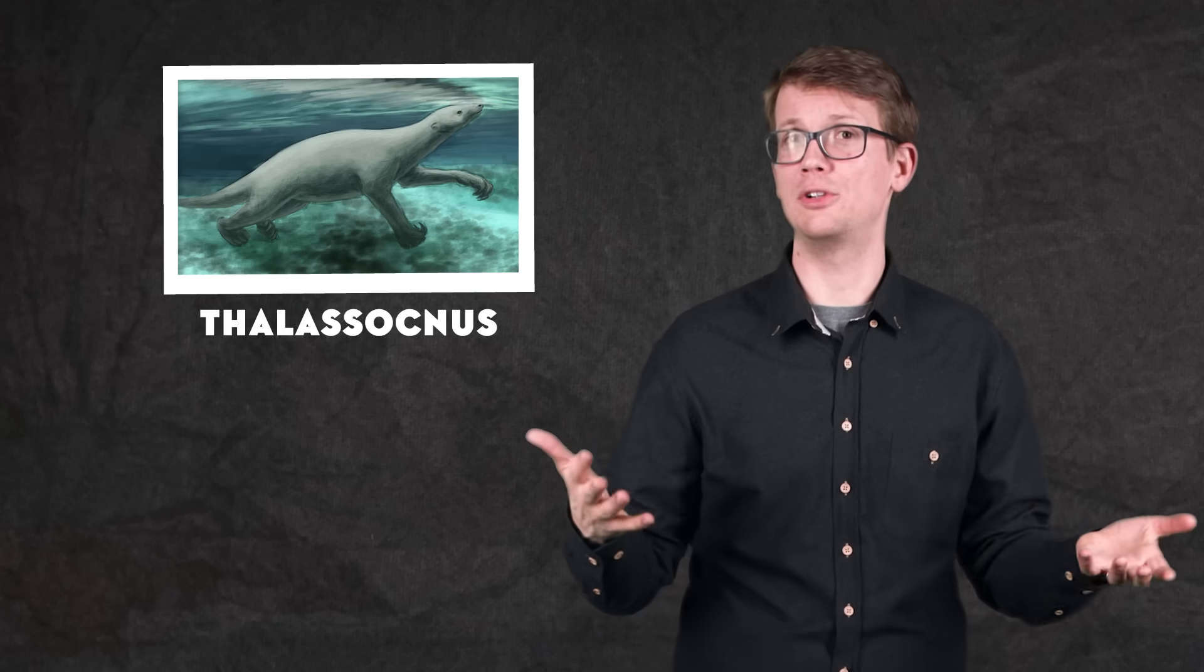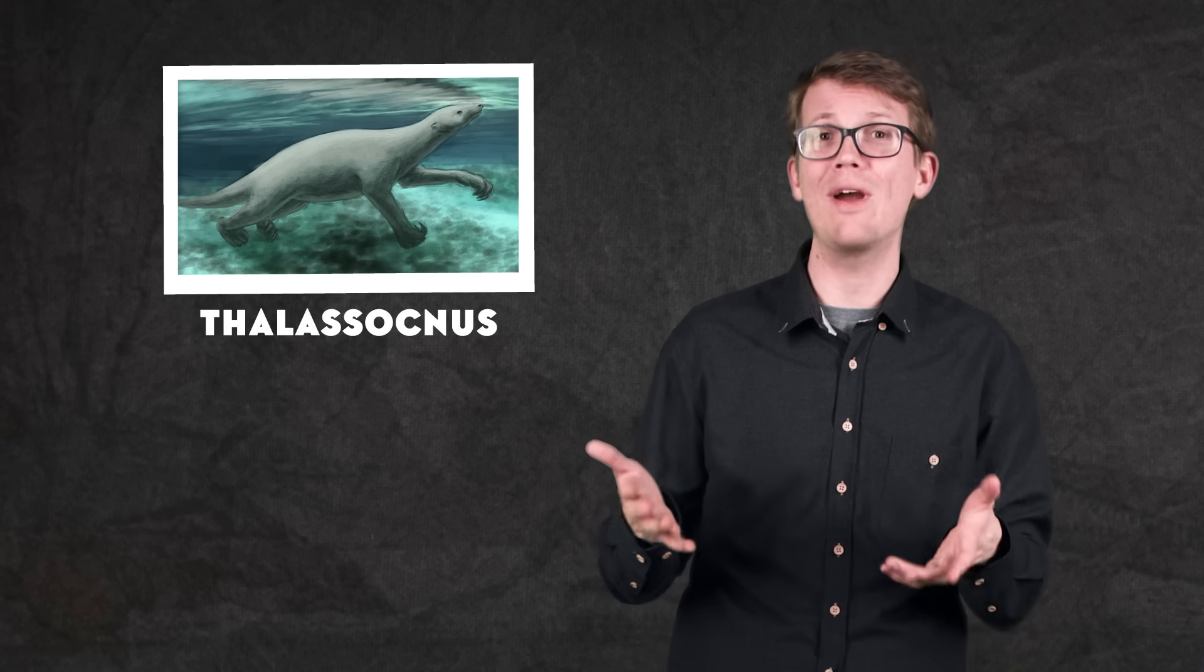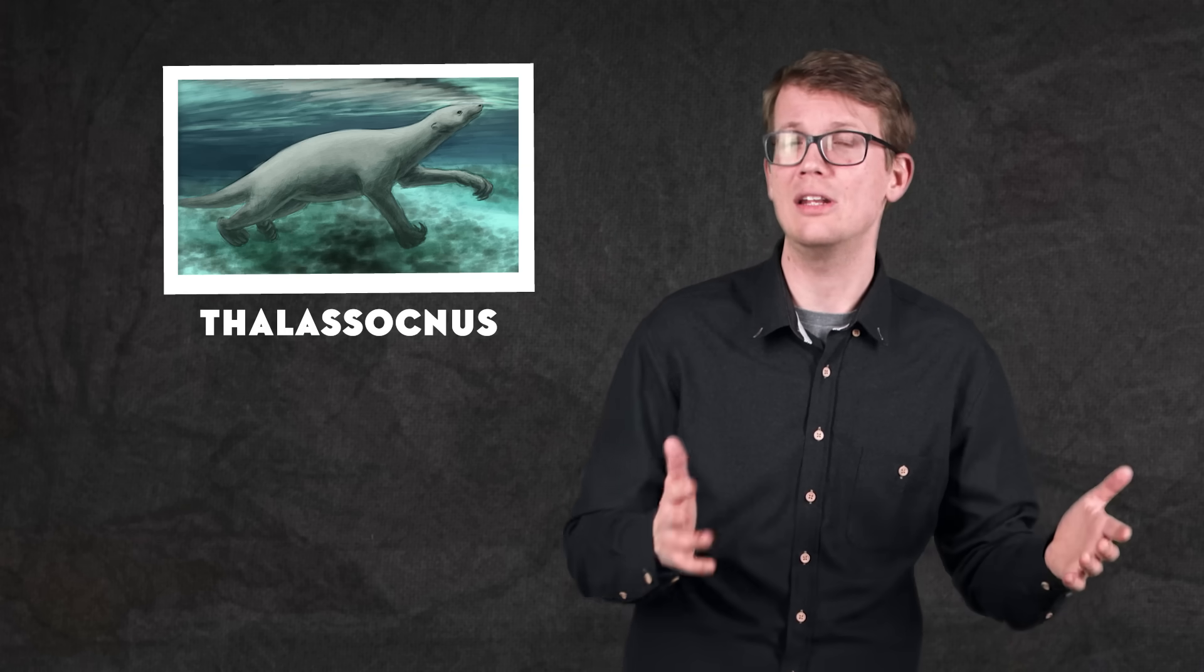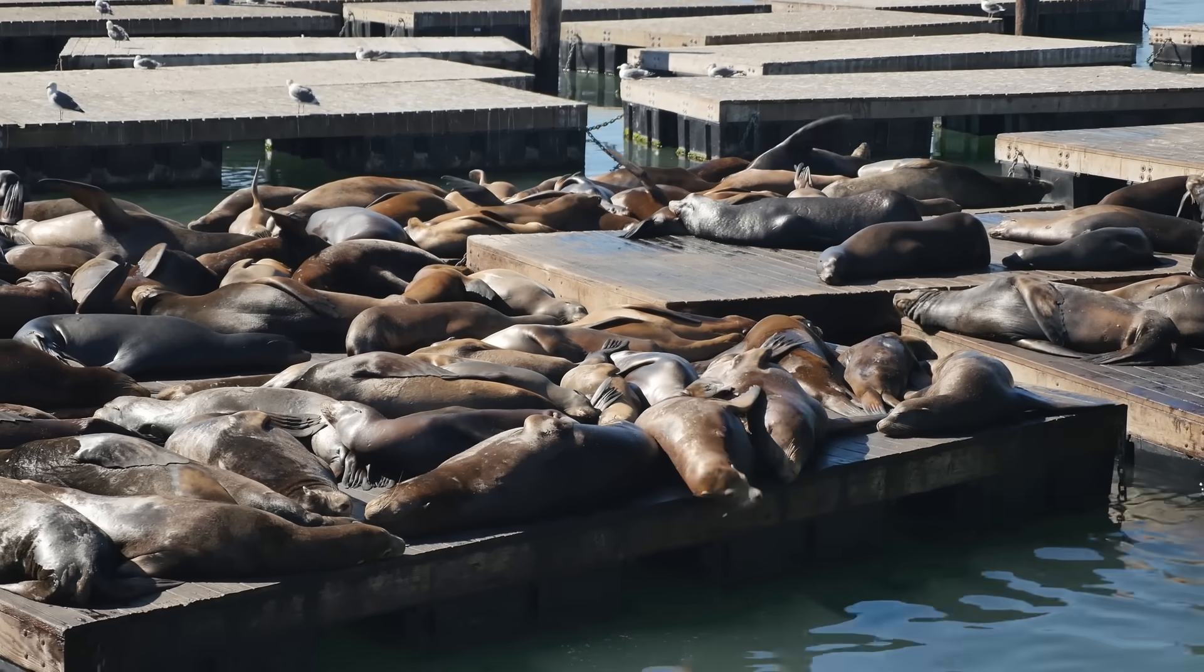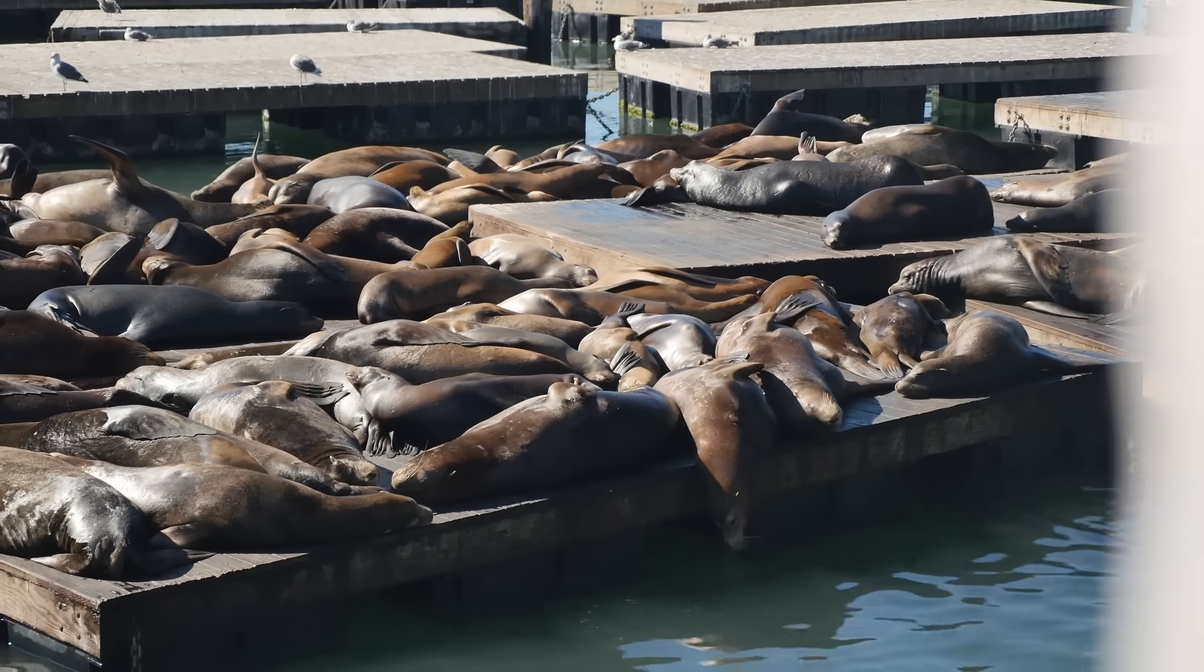Over the course of around four million years, it became more specialized for an aquatic life, developing denser ribs and limb bones to help weigh it down as it began foraging in deeper waters. It also grew in size, eventually becoming as big as a modern sea lion. Still, Thalassocnus was probably not a great swimmer. Instead of having, like, flippers, it used its big claws to pull itself along the ocean floor against the force of the crashing waves.